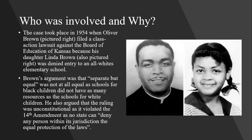So, who was involved in this case and why? The case took place in 1954 when Oliver Brown filed a class-action lawsuit against the Board of Education of Kansas because his daughter, Linda Brown, was denied entry to an all-white elementary school. Brown's argument was that separate but equal was not at all equal, as schools for black children did not have as many resources as schools for white children. He also argued that the ruling was unconstitutional as it violated the 14th Amendment, which states that no state can deny any person within its jurisdiction equal protection of the laws.